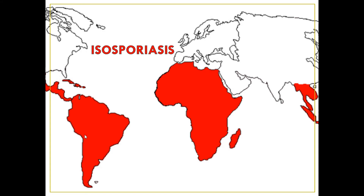A very good day everybody. Today we are going to explore a human intestinal disease called isosporiasis, caused by a coccidian parasite known as Isospora belli. Please note that isosporiasis and cystoisosporiasis are terms that are used interchangeably, representing the same disease.